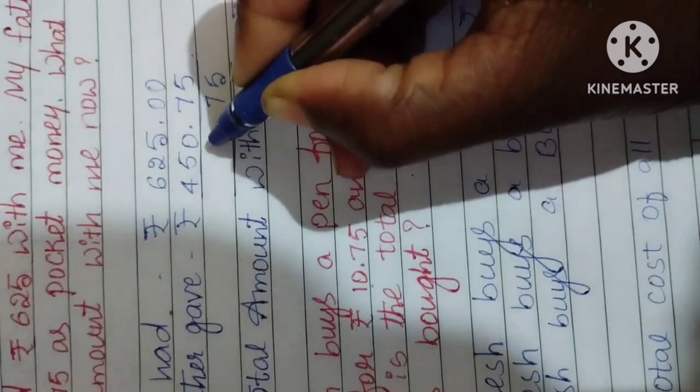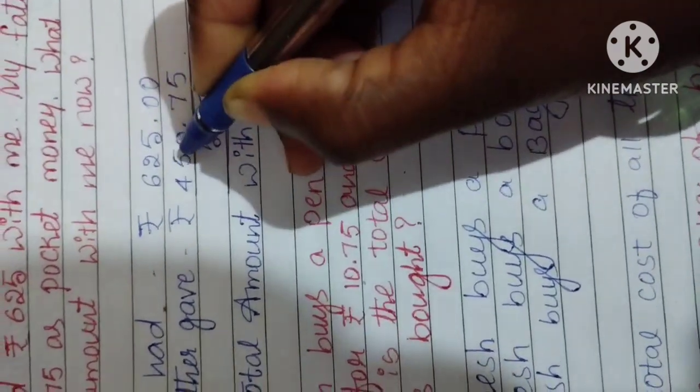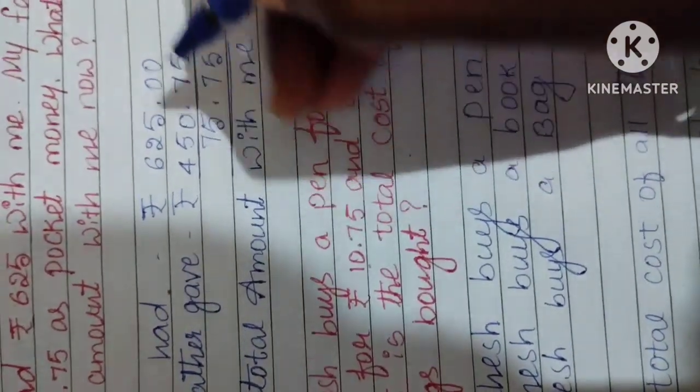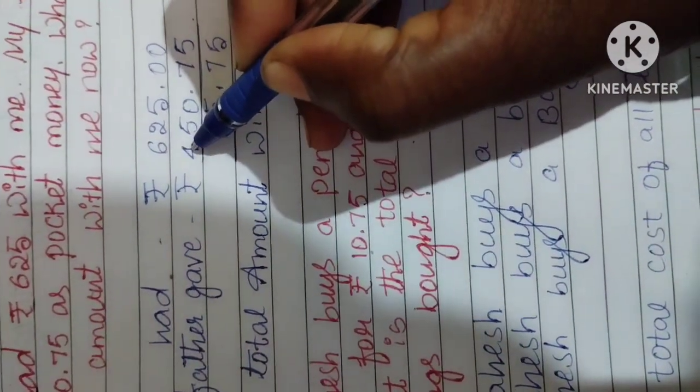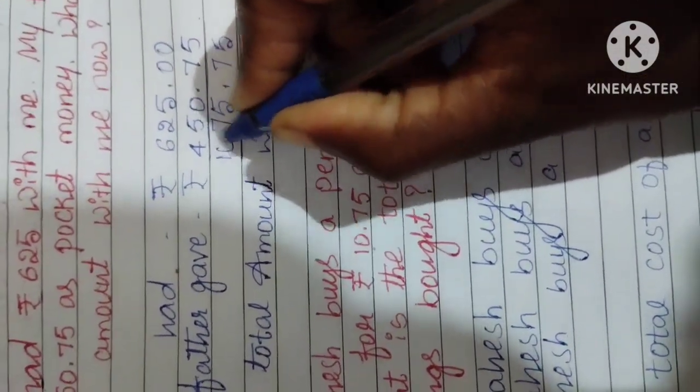5 plus 0 is 5, 5 plus 2 is 7, 6 plus 4 is 10.